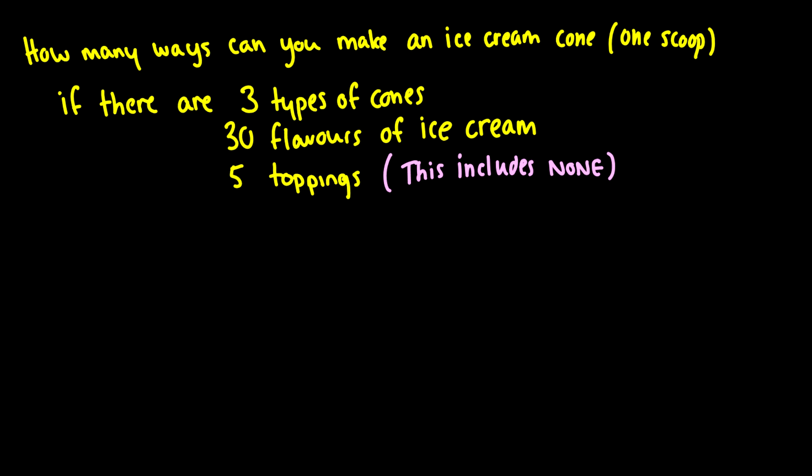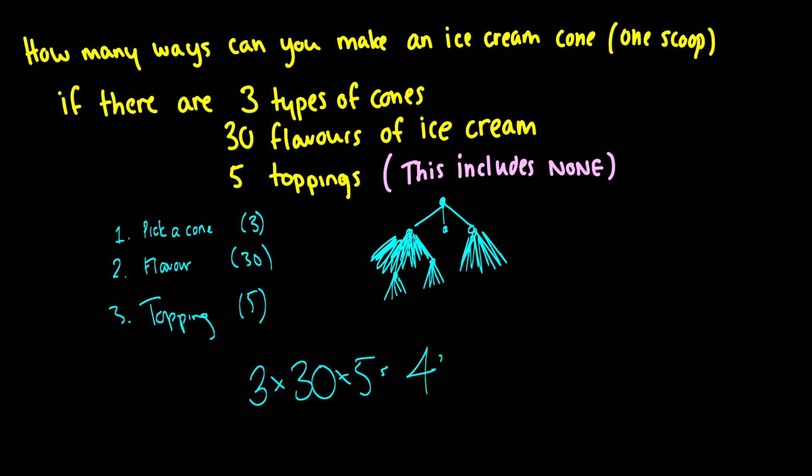Well, first of all, step one is you need to pick a cone. So there's three possible ways you can do the first one. And then your second one, you need to pick a flavor. So if you have nothing, your first choice is going to be one of three cones. Your second choice, you're going to have 30 different flavors to choose from. So this is a very terrible tree to draw, but each option has 30 there. And then your last one, you have to pick a topping. And each one of these little nodes here is going to split off into five different parts, because you have five different options. So the total number of ways to do this is going to be 3 times 30 times 5, which is 450 ways.